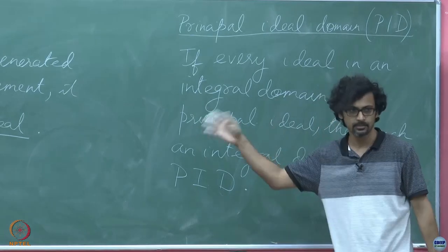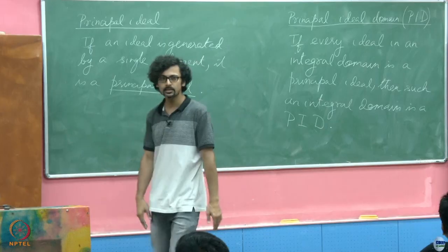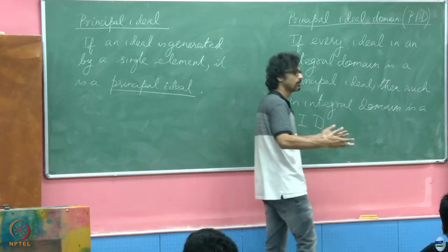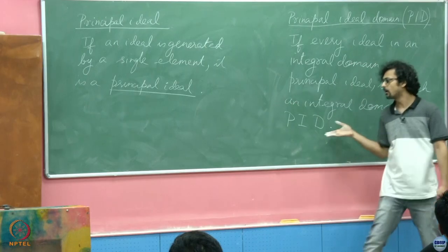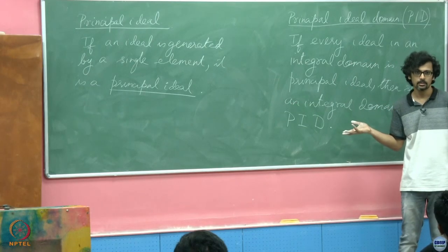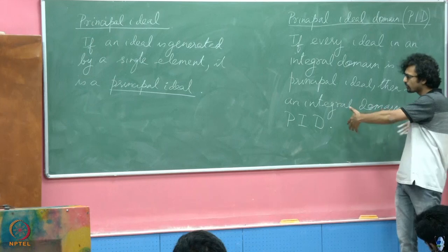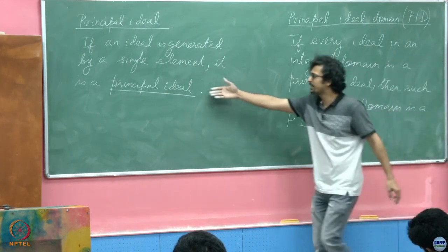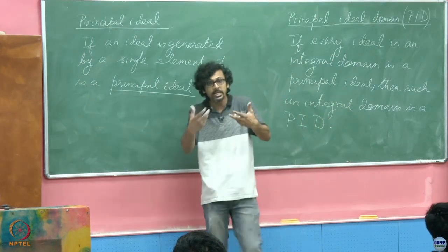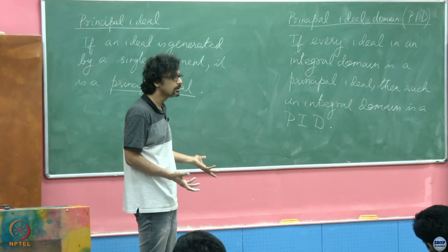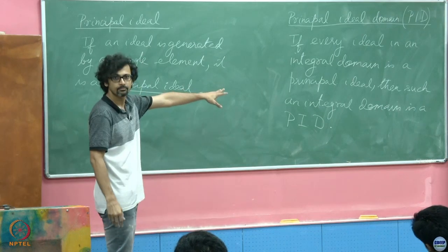These are both nothing but definitions — nothing to prove here. Why did I define this? Because I don't want to keep saying 'an animal with four limbs'; I'd rather say 'a quadruped.' We give these definitions not to make life messy but to make life simple. Now imagine if I had not defined a principal ideal — I would have had to write out the whole condition every time. Instead, I define principal ideal, and then a principal ideal domain follows naturally.